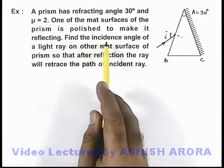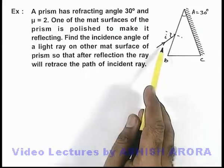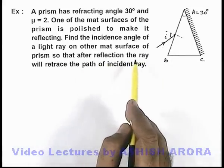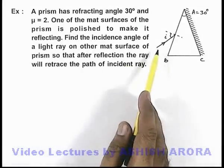We are required to find the incidence angle of a light ray on the other matte surface of the prism so that after reflection from the other surface, the ray will retrace the path of the incident ray.